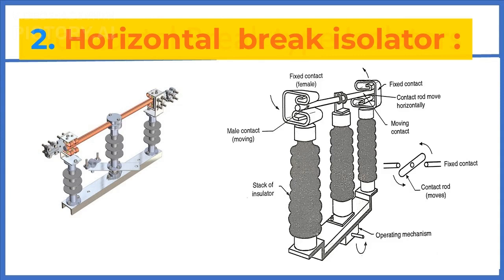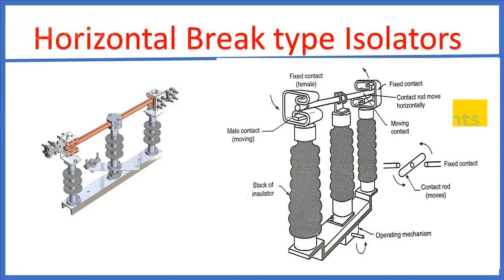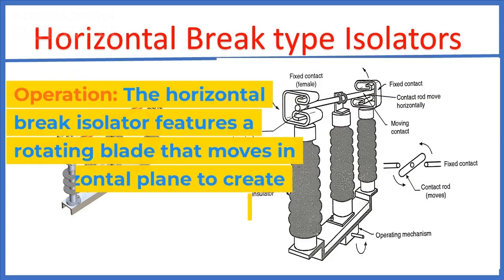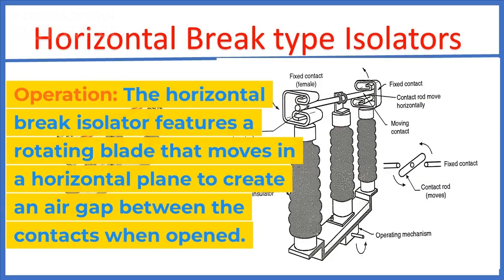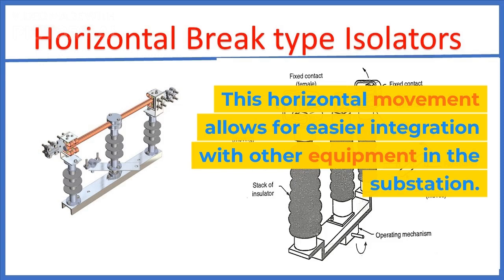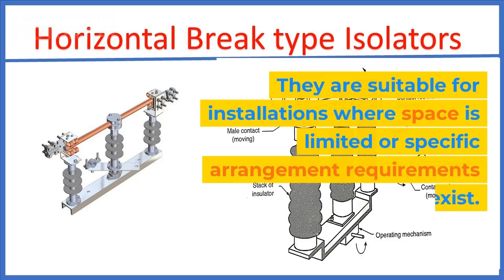Now, let's move on to the horizontal brake isolator. This type of isolator operates by horizontally breaking the circuit, providing additional flexibility in certain applications. The horizontal brake isolator features a rotating blade that moves in a horizontal plane to create an air gap between the contacts when opened. This horizontal movement allows for easier integration with other equipment in the substation. Horizontal brake isolators are commonly used in outdoor substations and switchyards, and are suitable for installations where space is limited or specific arrangement requirements exist.